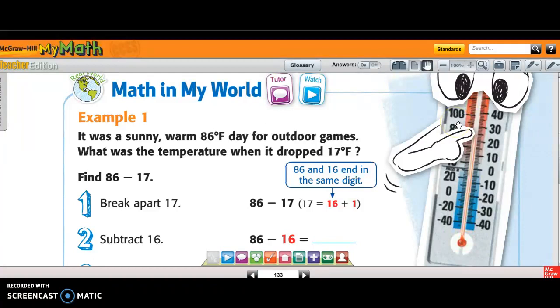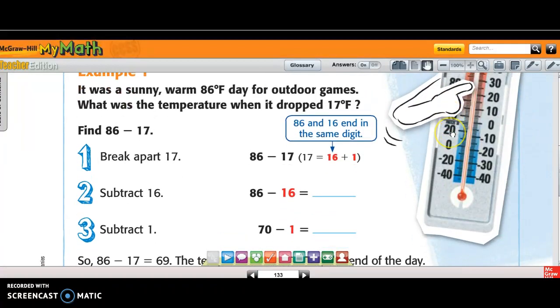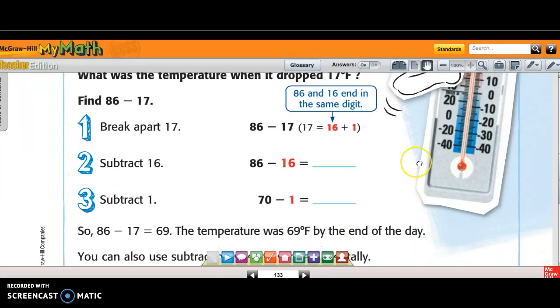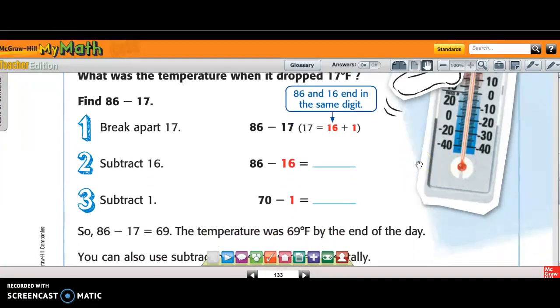So let's see. It was a sunny, warm 86-degree day for outdoor games. What was the temperature when it dropped 17? So it started at 86. And then 86 minus 17, and then they decomposed 17 equals 16 plus 1. That's what they did.